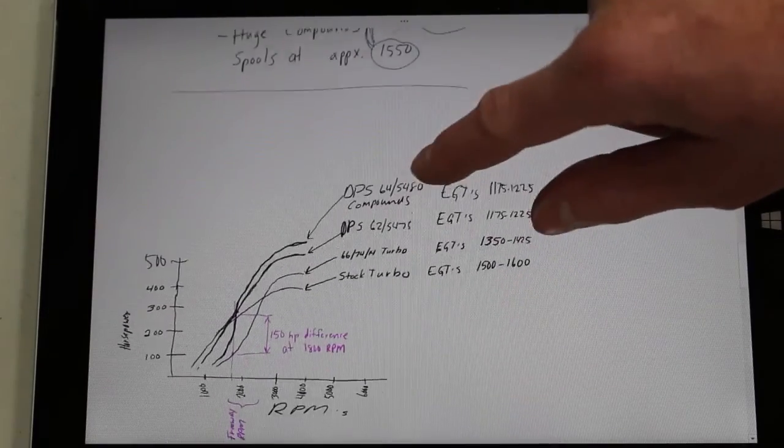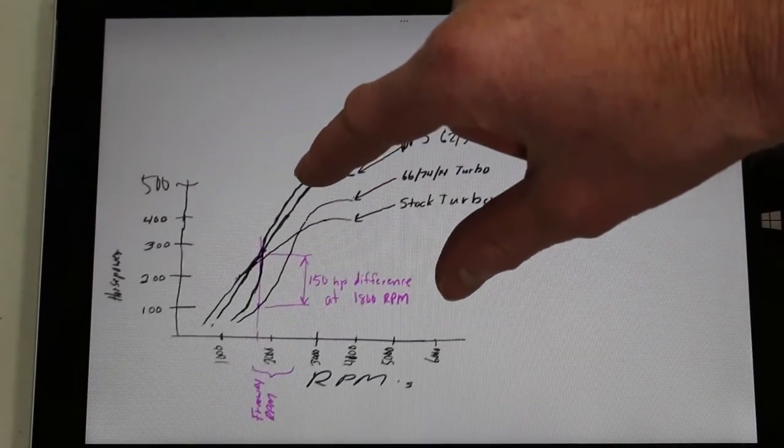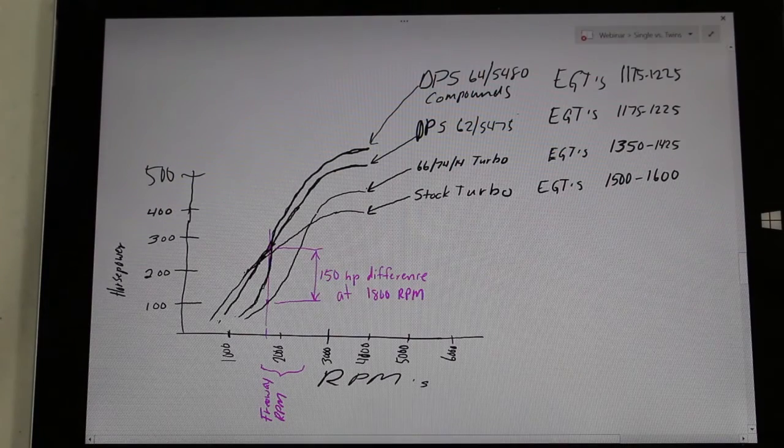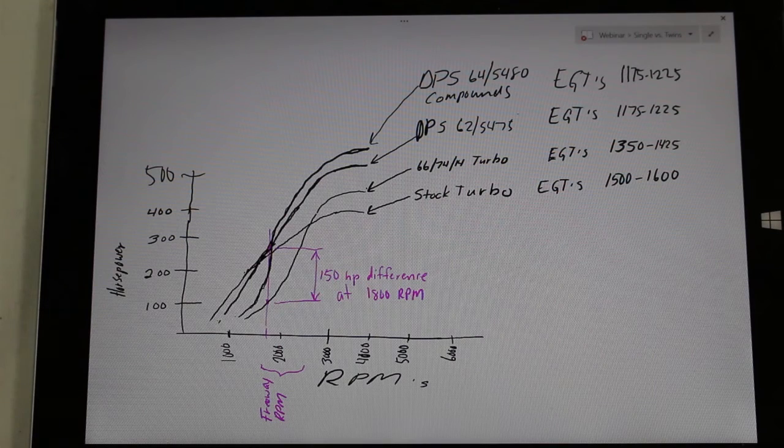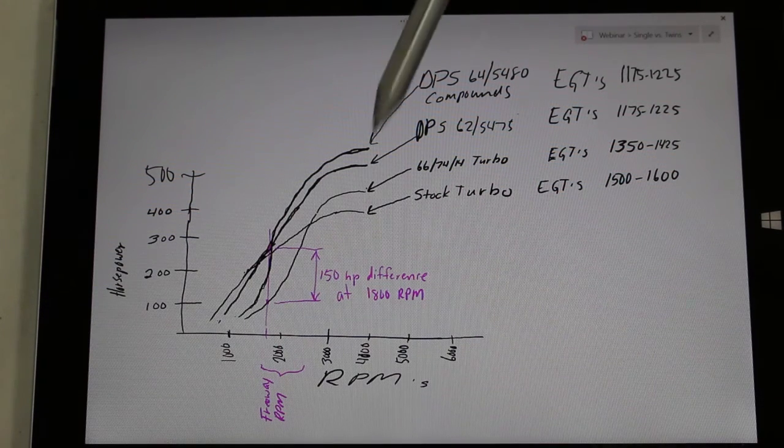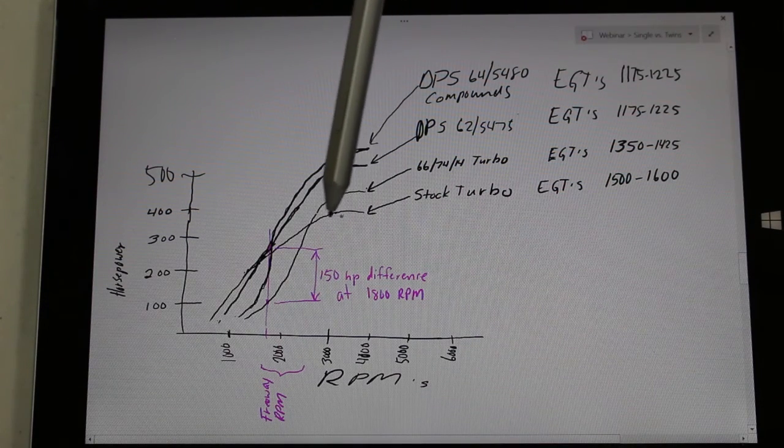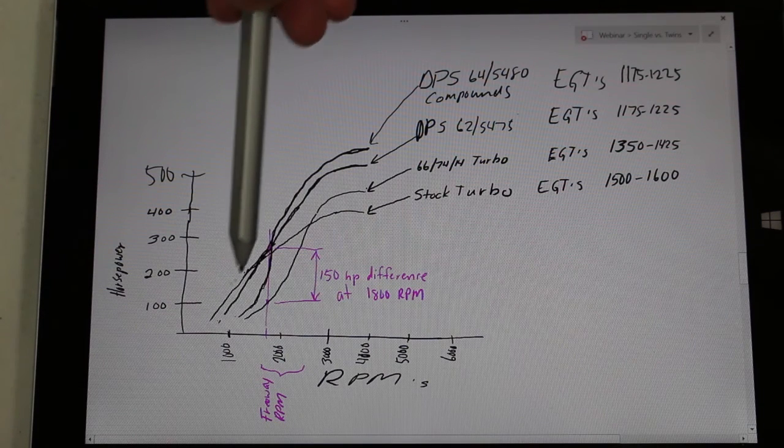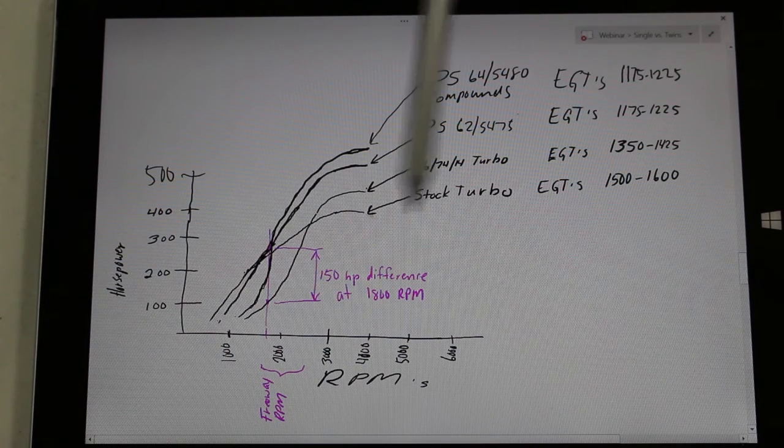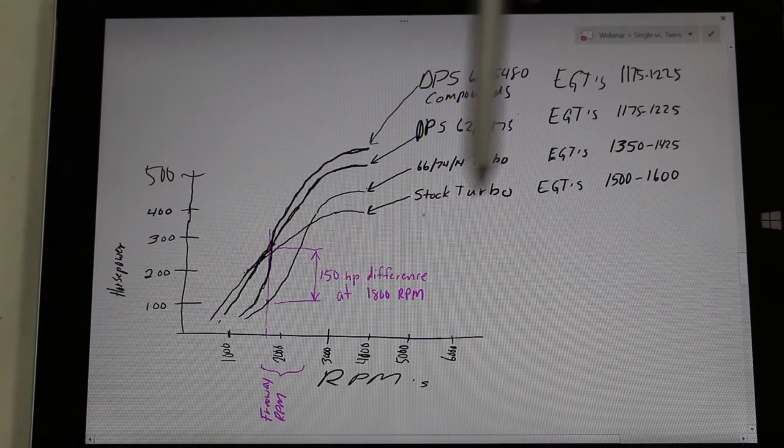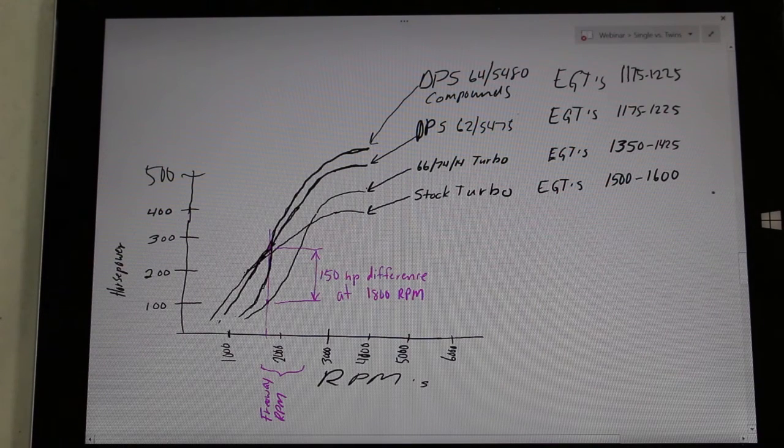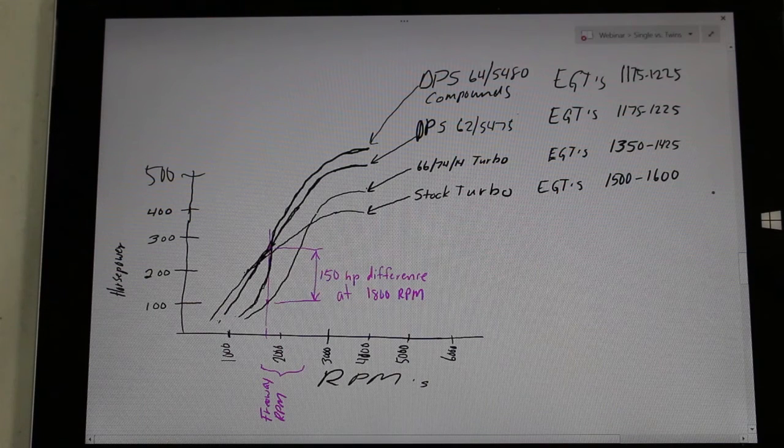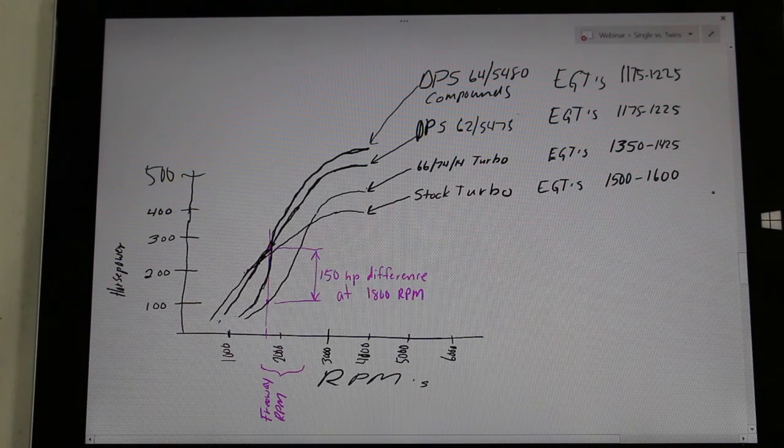So one more quick comparison. I have here a graph that we've actually plotted off points to match real dyno points. So we could have a good comparison. Even though it's hand drawn on the graph, it's pretty accurate. So a single stock turbo is shown right here and it makes good bottom end power and torque, but it really chokes out at the top end and EGTs at about a 400 horse level are really hot as you can see. They're like 1500 to 1600 degrees depending on your altitude. And that's what we're seeing at our altitude is like 1500 to 1600. We're about 4500 feet altitude here.